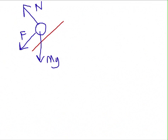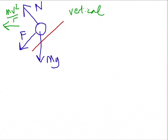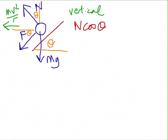Now we need to work out the normal force. As it's going in a circle, there must be a net acceleration towards the centre of mv²/r. As it's neither flying up into the air nor sinking into the ground, there must be vertical balance. Let's get some angles in here. This angle here is theta, which means that angle there is theta as well. So vertically, we have n cos θ upwards, and the downward forces are f sin θ and mg.